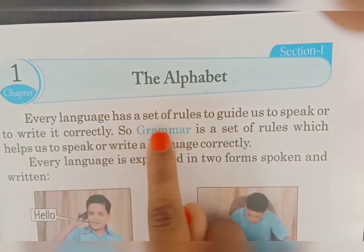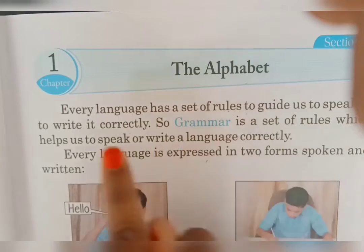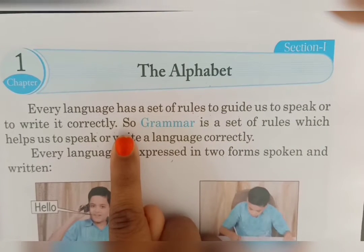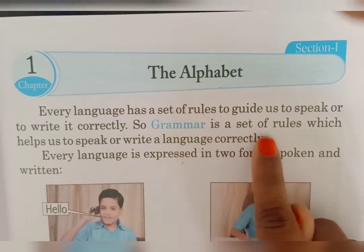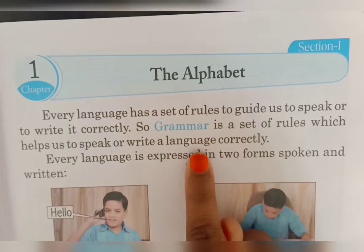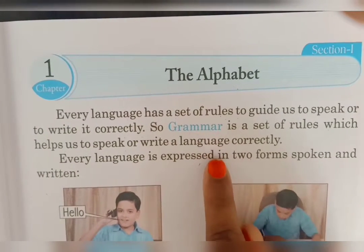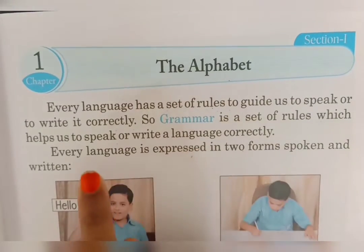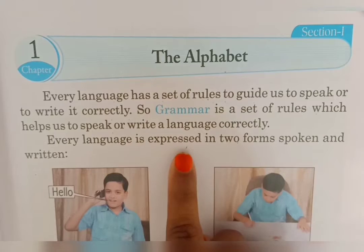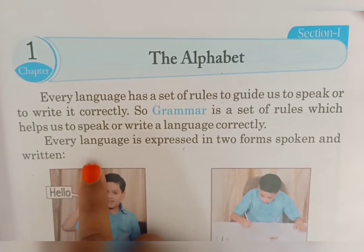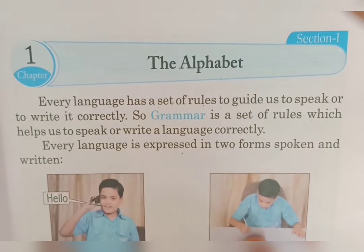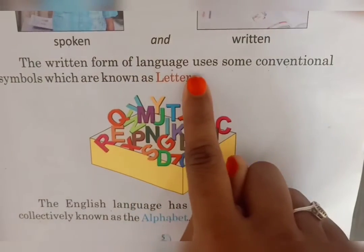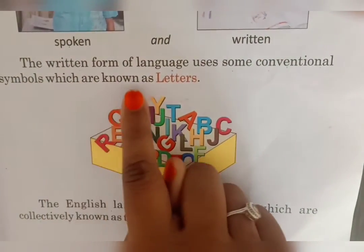Every language has a set of rules to guide us to speak or write it correctly. Every language is expressed in two forms: spoken and written. The written form of language uses some conventional symbols which are known as letters.